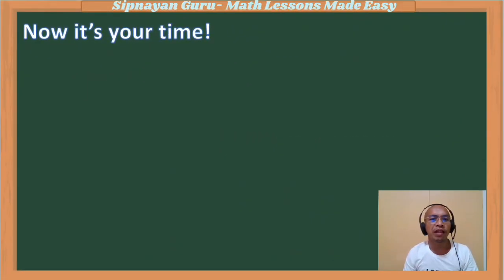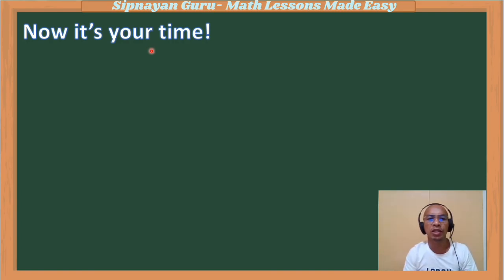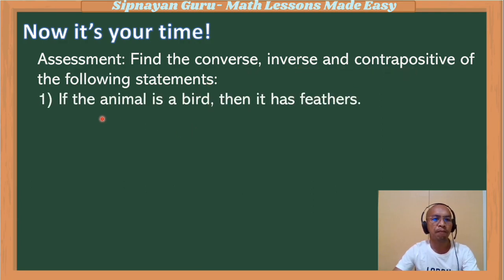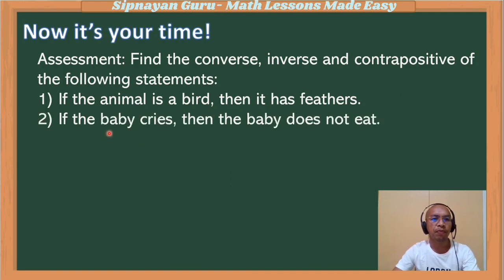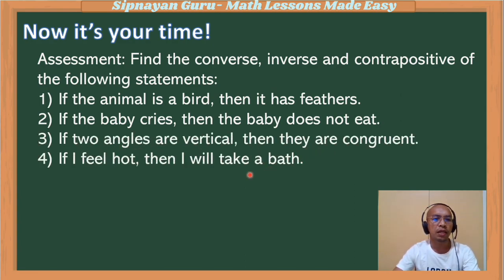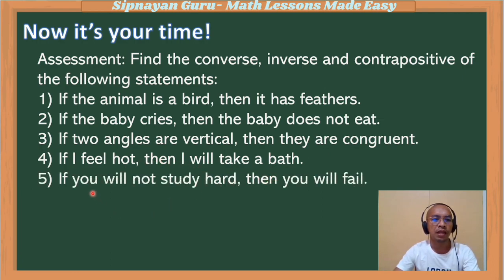After learning all the techniques in finding the converse, the inverse, and the contrapositive of the conditional statement, now it's your time to measure your understanding. You will be asked to find the converse, inverse, and contrapositive of the following statements: if the animal is a bird, then it has feathers; if the baby cries, then the baby does not eat; if two angles are vertical, then they are congruent; if I feel hot, then I'll take a bath; and lastly, if you will not study hard, then you will fail.